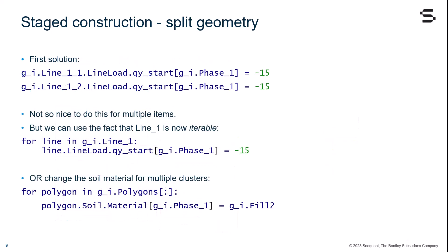The first solution would be to follow the same logic as the GUI. Simply create two commands to configure our two split line loads in staged construction. However, that is not really so nice if that needs to be repeated multiple times for all the various split objects. But we can use the fact that line 1, due to the intersection, has now become an iterable object. Using our Python skills, we can write the following for loop: for line in g_i.Line_1, line.LineLoad.qy_start[g_i.Phase_1] is assigned to minus 15, if all we want is to change the vertical line load value.